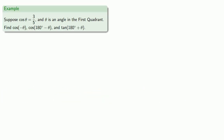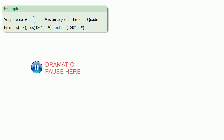For example, suppose that the cosine of theta is 3/5 and theta is an angle in the first quadrant. Can we find cosine of minus theta, cosine of 180 degrees minus theta, and tangent of 180 degrees plus theta?